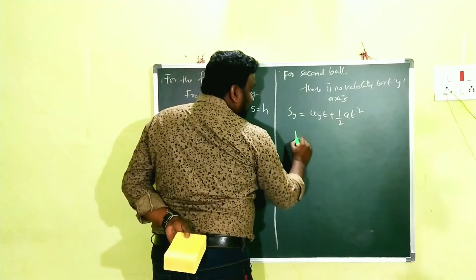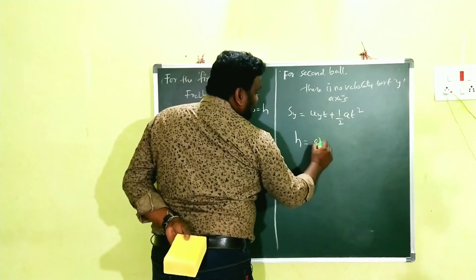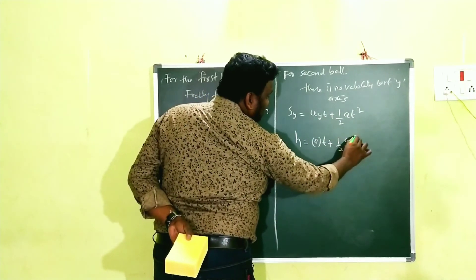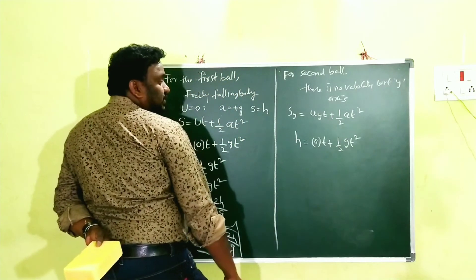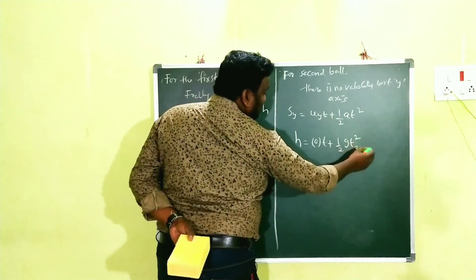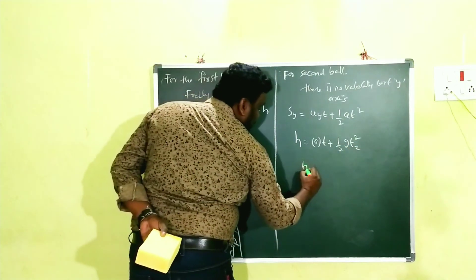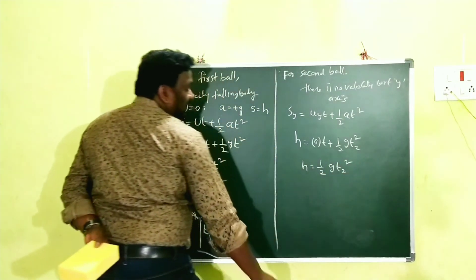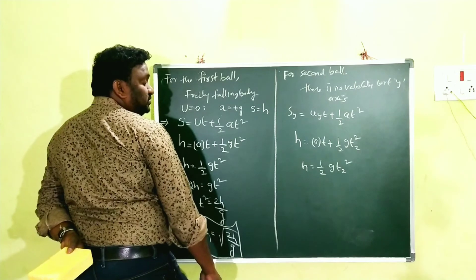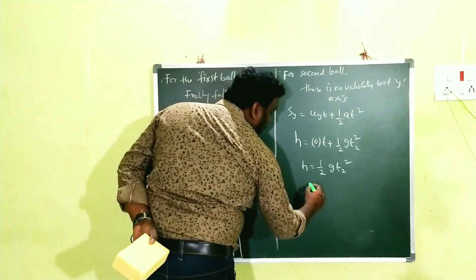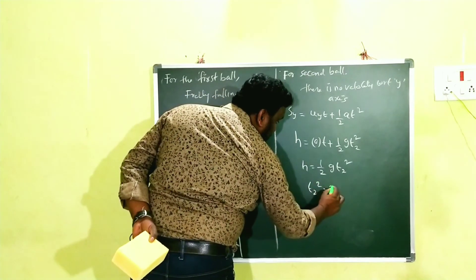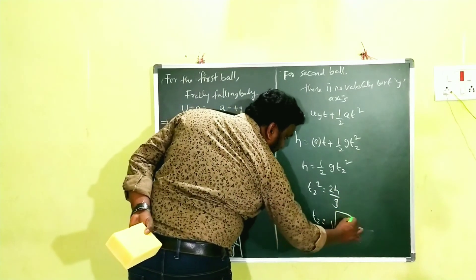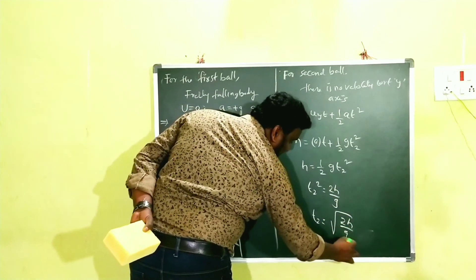In the y-direction: s_y = u_y·t + ½g·t². Here s_y = H and u_y = 0, so H = ½·g·t₂². This gives t₂² = 2H/g, and therefore t₂ = √(2H/g).